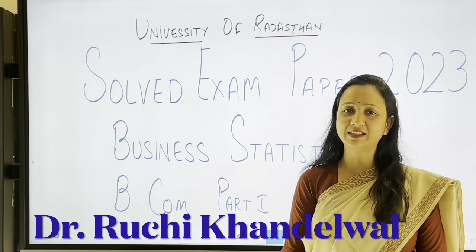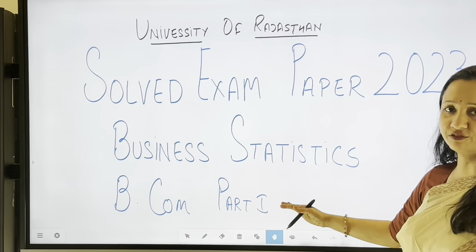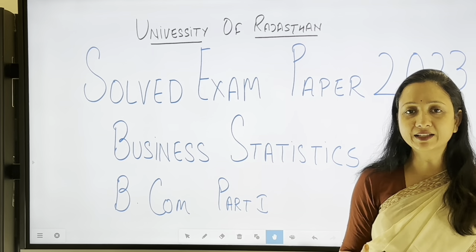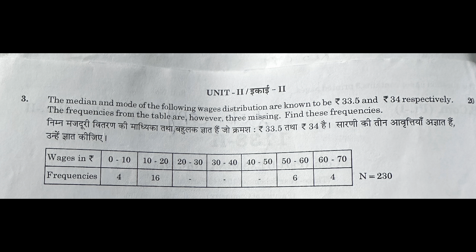Hello students, today we will discuss the exam paper of Business Statistics, B.Com Part 1, University of Rajasthan examination 2023. The first practical question from Unit 2 is: the median and the mode of the following wages distribution are known to be rupees 33.5 and 34 respectively. The frequencies from the table are however three missing — find these frequencies.